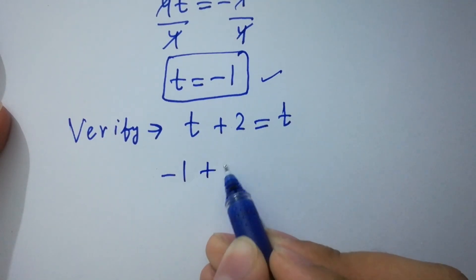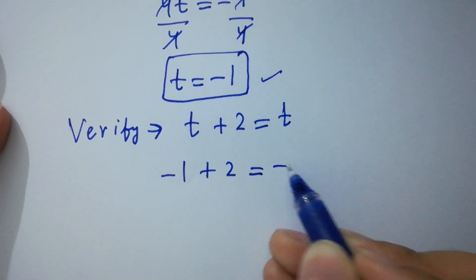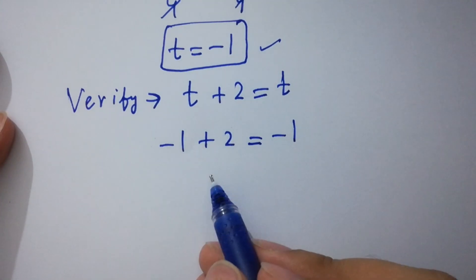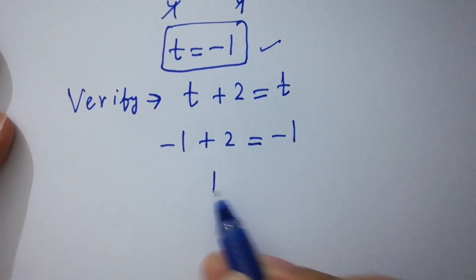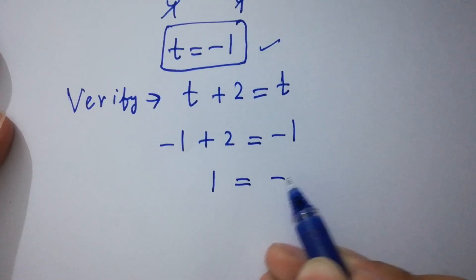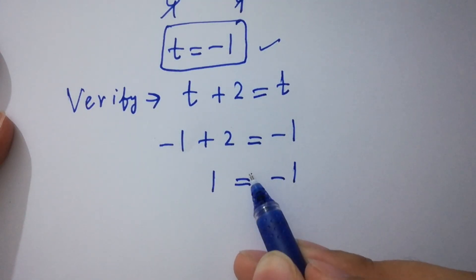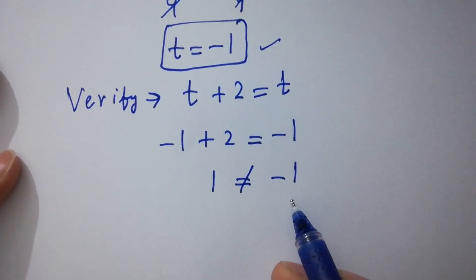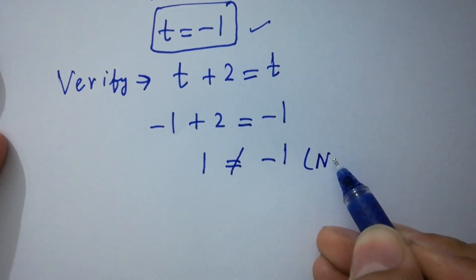Minus 1 plus 2 equals minus 1. Minus 1 plus 2 we have plus 1 equals minus 1. 1 does not equal minus 1, which is not possible.